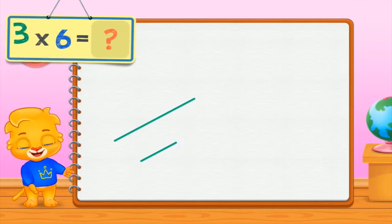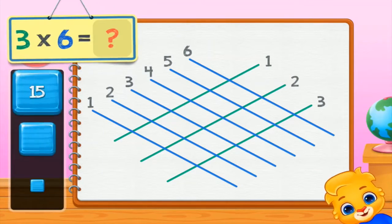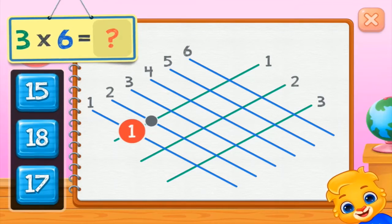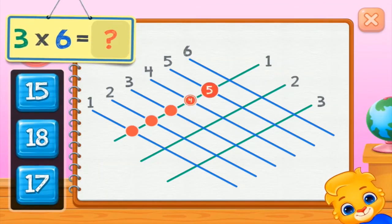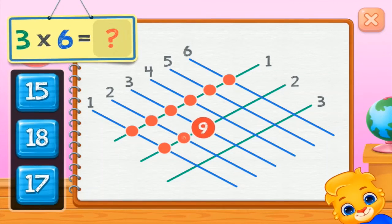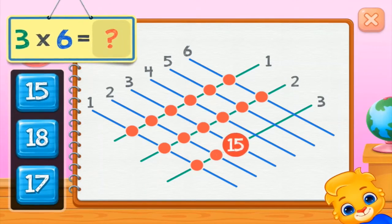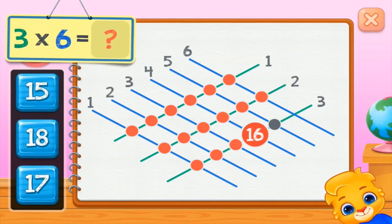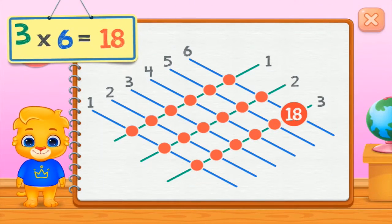3 times 6 equals 1, 2, 3, 4, 5, 6, 7, 8, 9, 10, 11, 12, 13, 14, 15, 16, 17, 18. 3 times 6 equals 18.